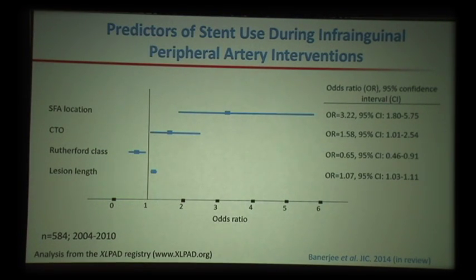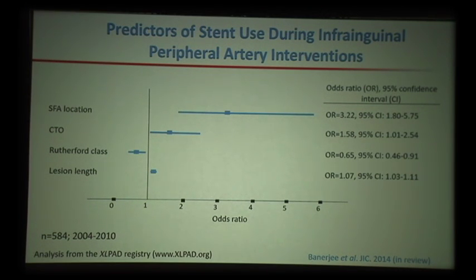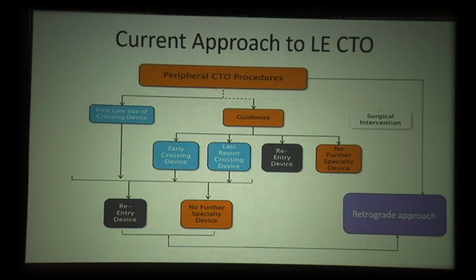From our earlier paper published in 2014, accepted in GIC, the presence of a CTO and its location has an impact on durability of stents and the types of stents used to treat these patients. Therefore, the best way to think about treatment of SFAs is starting from the point of crossing.